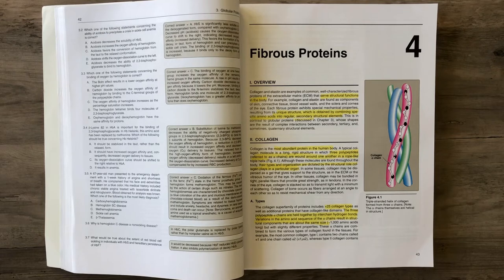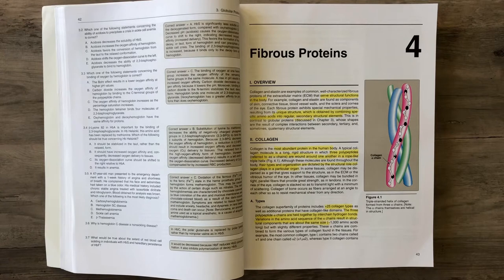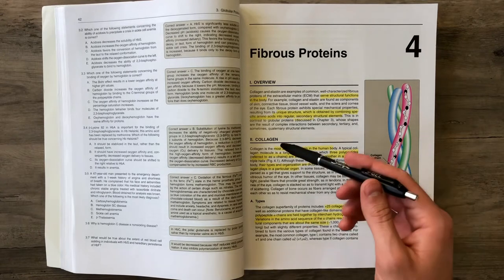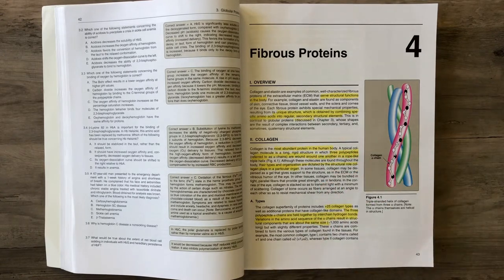Hello and welcome to the review of chapter 4 of Lippincott's Biochemistry Textbook. In this chapter we're going to go over fibrous proteins, mainly collagen and elastin.